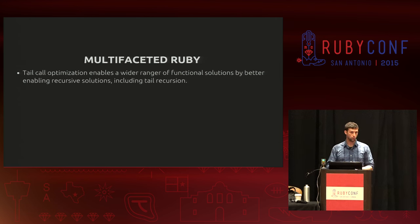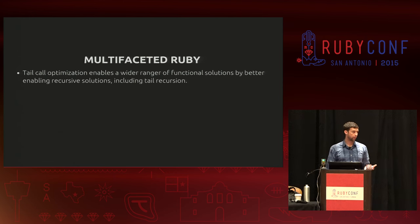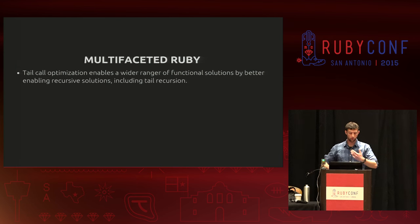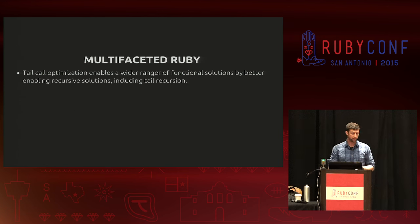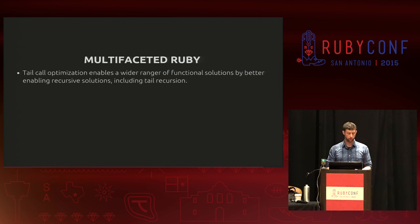Let's talk about some of the benefits. Ruby is a multi-paradigm language, taking the best of a bunch of different languages and consolidating that into the awesomeness we know as Ruby. But in its multifaceted approach, you run into that same flame war between very object-oriented people and those who prefer the functional power of procs and lambdas. On the functional side, tail call optimization enables a wider range of functional solutions by better enabling recursive solutions, including tail recursion.